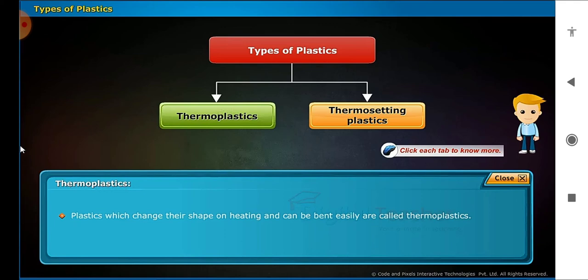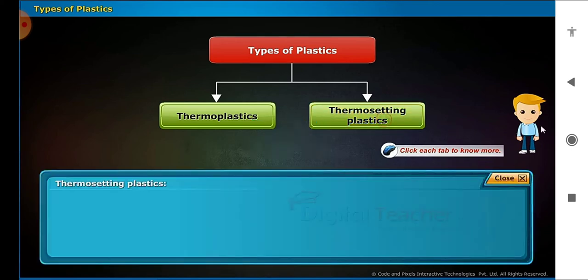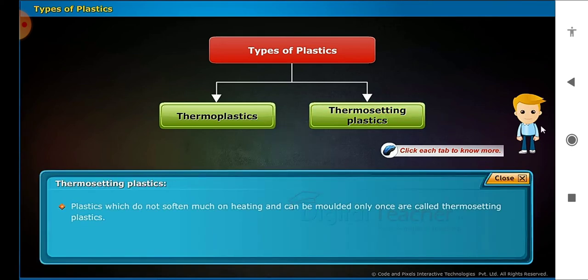Plastics which change their shape on heating and can be bent easily are called thermoplastics. Polythene, PVC and polystyrene are common examples of thermoplastics. Plastics which do not soften much on heating and can be molded only once are called thermosetting plastics. Bakelite and melamine are common examples of thermosetting plastics.